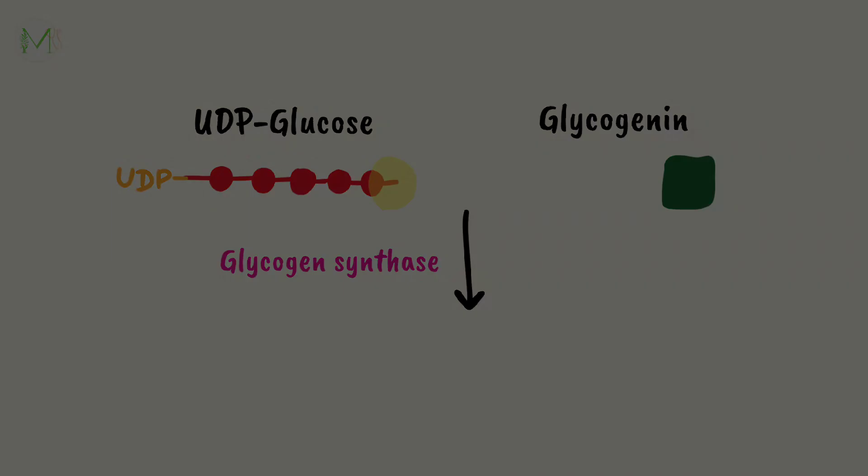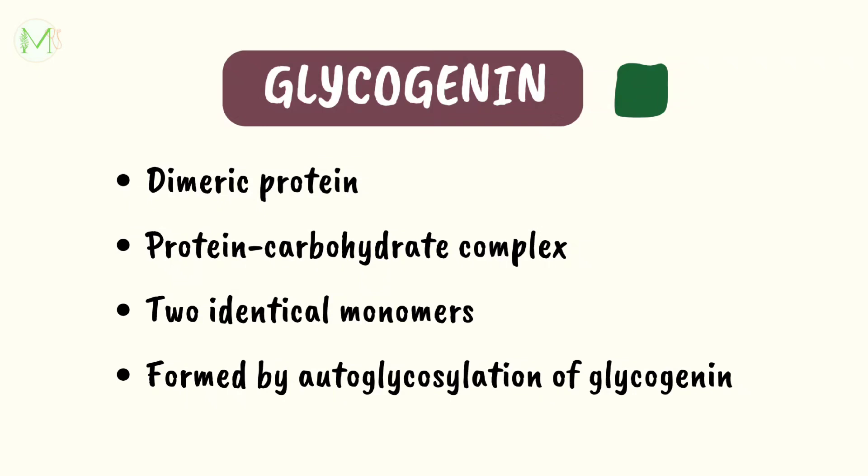Let's get to know about glycogenin in detail. It is a dimeric protein made up of protein-carbohydrate complex having two identical monomers. These monomers glycosylate each other using UDP-glucose till 7 glucose units are added. This is known as autoglycosylation. The resultant molecule is our glycogen primer to which glucose units are added by glycogen synthase.